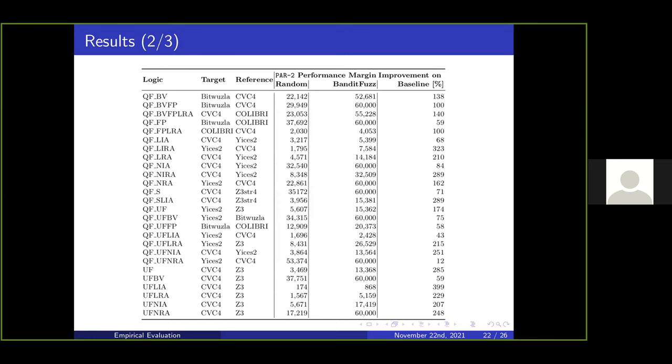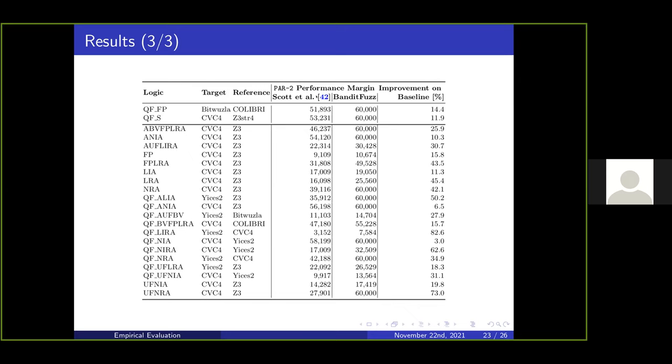Against another baseline, we consider previous work of just a single agent in the feedback loop. We baseline against the native code of this tool which only supported floating point and strings. Here we see consistent improvement. We adapted this code to follow their algorithm, and once again we see consistent improvement over the baseline.